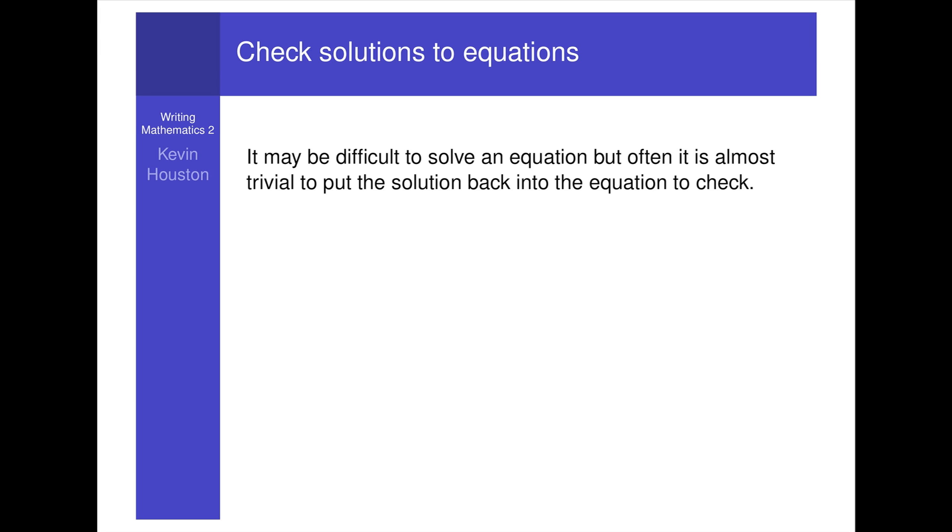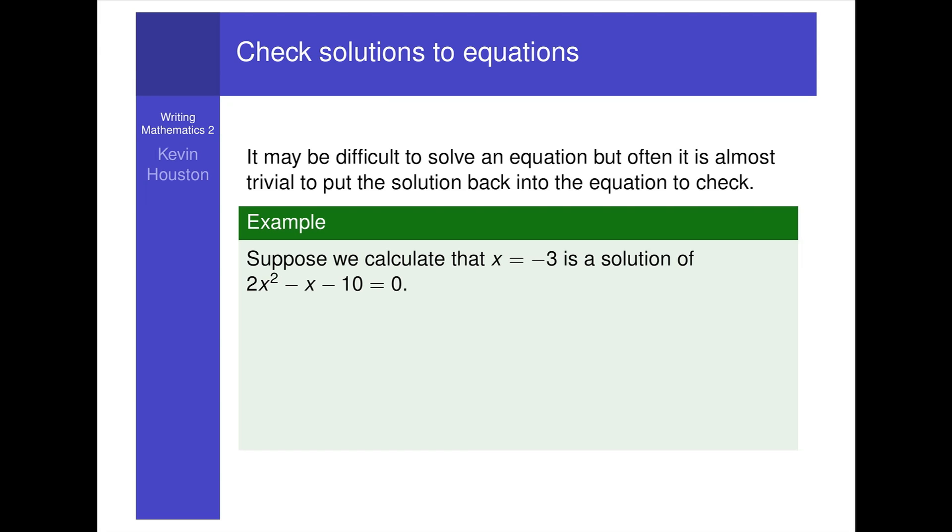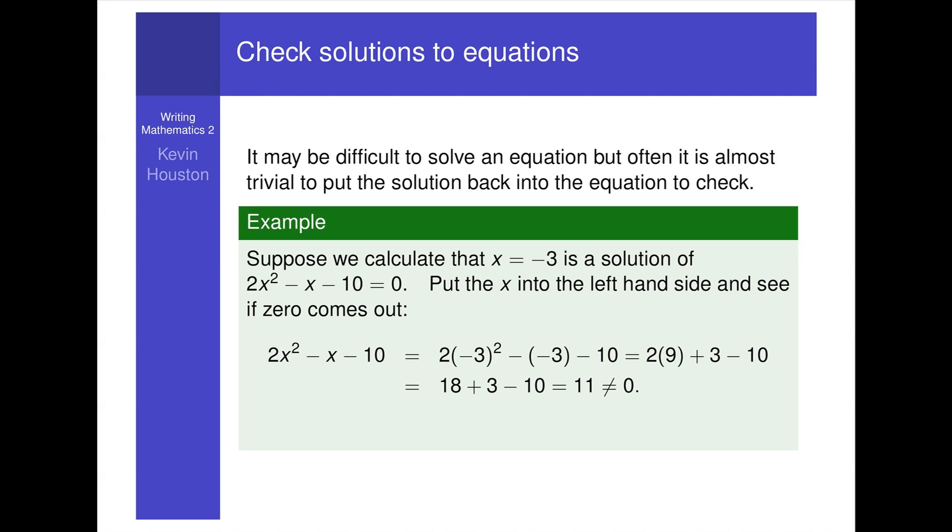Now it may be difficult to solve an equation, but often it is almost trivial to put back the solution into the equation to check. For example, suppose we calculate that x equals minus 3 is a solution of 2x squared minus x minus 10 equals 0. We can check this easily. Put the x into the left-hand side and see if 0 comes out. 2x squared minus x minus 10 equals 2 times minus 3 squared minus minus 3 minus 10, and that equals 2 times 9 plus 3 minus 10. So I get 18 plus 3 minus 10, which is 11, and that's not equal to 0. Thus our calculation was wrong. x equals minus 3 is not a solution.